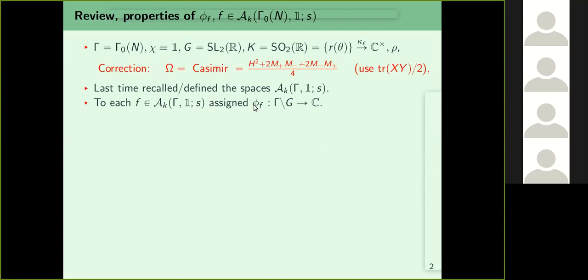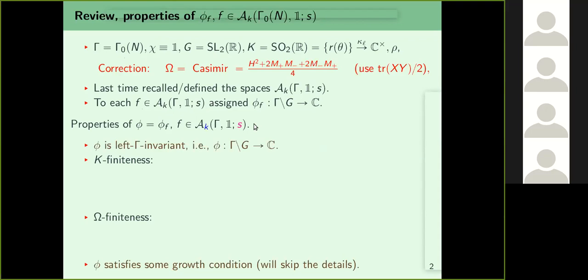Most of the time you won't need the explicit formula. Phi_f had several properties, almost implicit from yesterday. First, phi_f is left-Gamma-invariant — it is a function on G/Gamma, not just G. It also satisfies a growth condition, whose details I'll skip. Then it has two key properties: K-finiteness and omega-finiteness, which I did not state explicitly yesterday. Let me recall what these are.